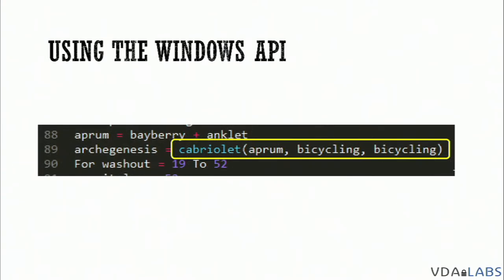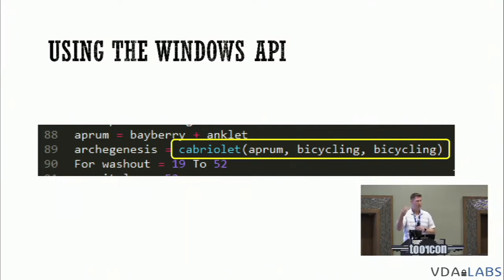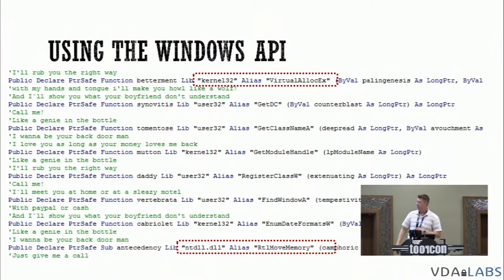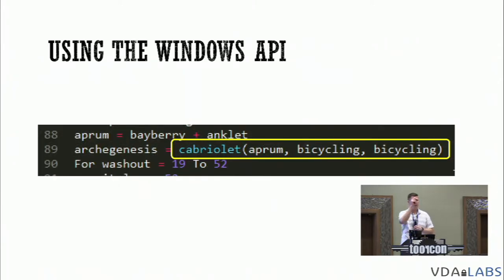This document is actually using shellcode embedded in a user form. The macros execute, use VirtualAlloc to allocate some memory, then use the RtlMoveMemory API to copy that shellcode from the user form — after decrypting or deobfuscating it — into the allocation. Logically: allocate memory, copy shellcode into memory, then execute it. There's a final API responsible for executing the code. It didn't jump out immediately as an obvious API, but tracing the calls I found the allocation, found the copy, and the only other API being called was this 'cabriolet.'